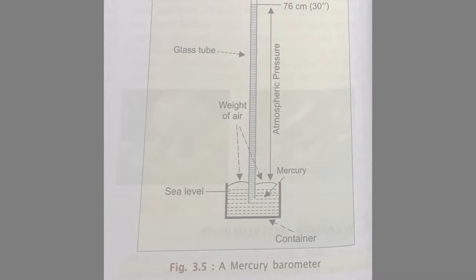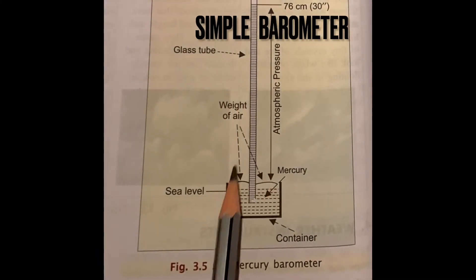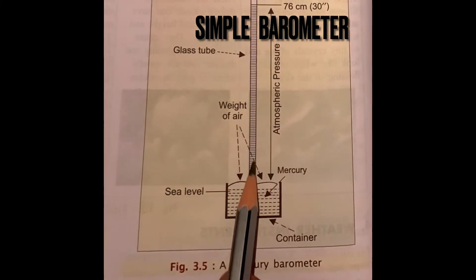Hello students, in my new video: barometer. It is used to measure atmospheric pressure, and the unit of measurement is the millibar. There are two types of barometers. Number one is simple barometer, in which the tube is filled with mercury.